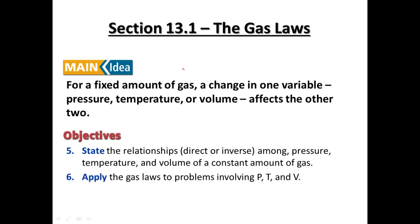In our gas laws, we're going to be looking at a fixed amount of gas — a known amount. We can change one variable, either pressure, temperature, or volume, and see how it affects the others. We're going to look at the relationships — direct or inverse — among pressure, temperature, and volume of a gas, and we're going to be solving problems for pressure, temperature, and volume. Those are our objectives for this section.